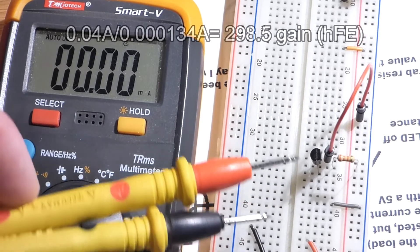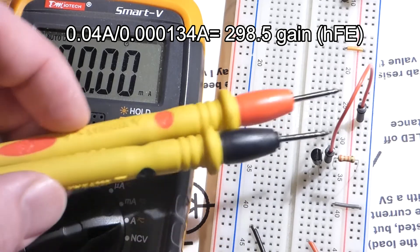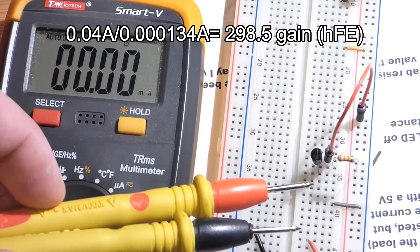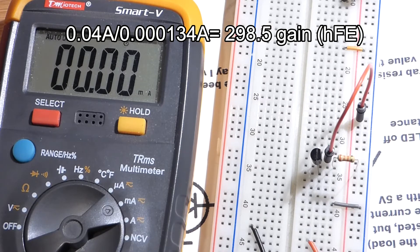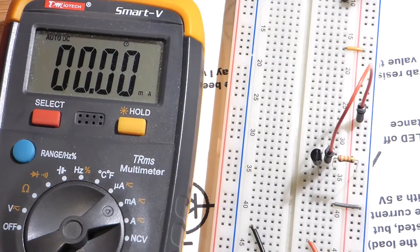We're getting about 300 times the current going from collector to emitter as the base to emitter. That gives you an idea of the gain. Now of course, the number rose higher than that.